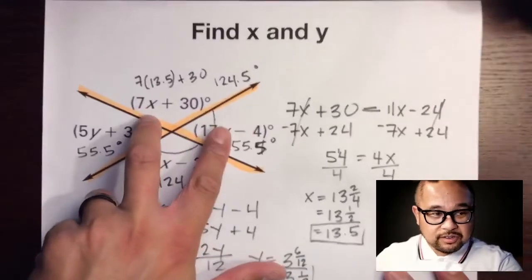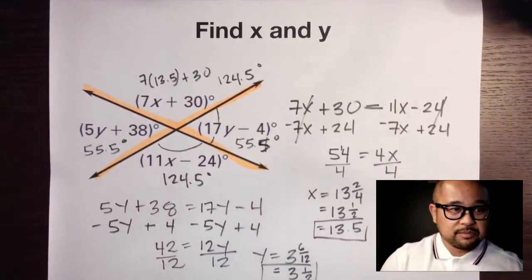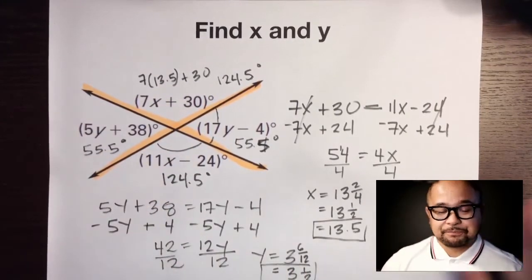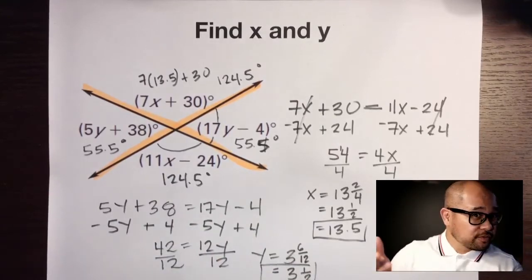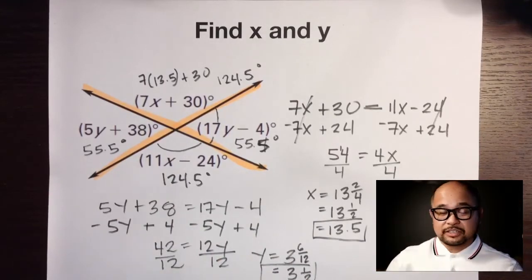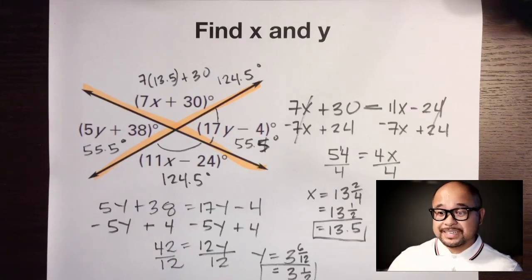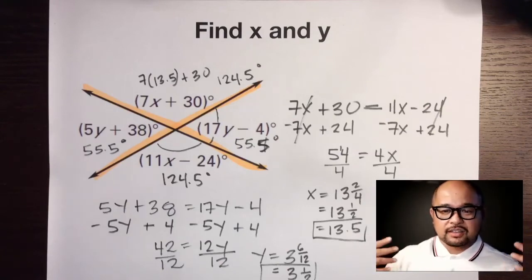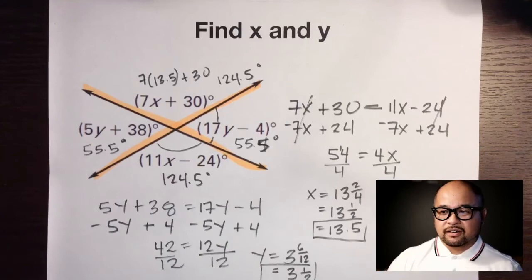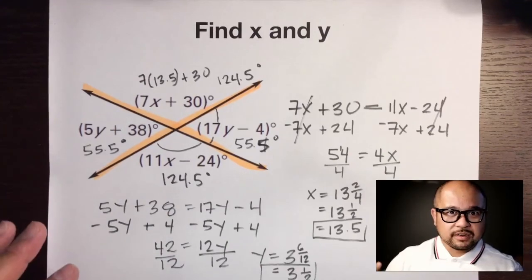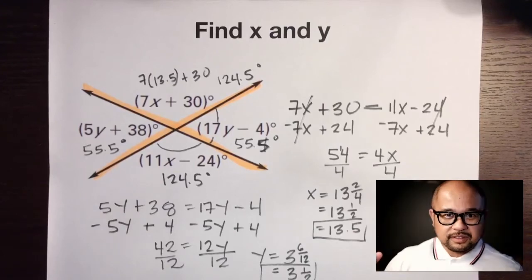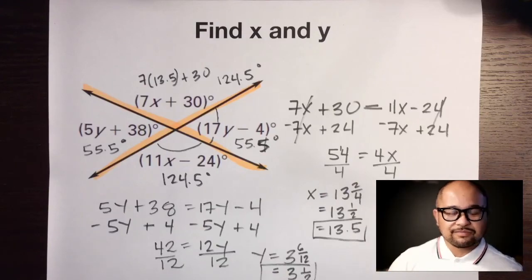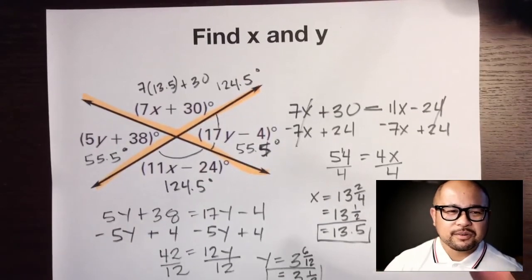Vertical angles are congruent — same measurements — so put an equal sign between them, not a plus sign. Hopefully you understand vertical angles and can get them correct on your next quiz, test, or final. Don't forget your previous knowledge on supplementary and complementary angles. As you learn new things, don't delete old things — your brain can hold a lot. That's Mr. Q — have a great day!